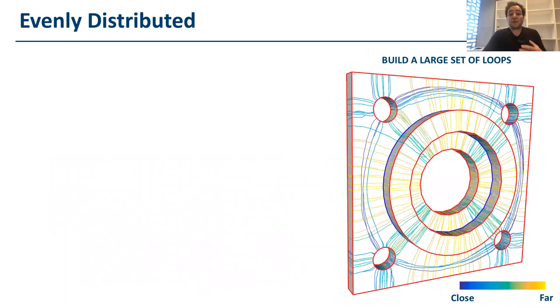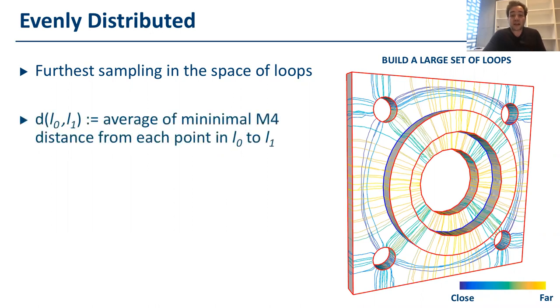In order to distribute the loops evenly on the surface, we perform further sampling in the space of loops. First we define the distance between two loops as average distance between each point of one loop to the closest point on the other. This distance is defined in M4 as defined in the paper by Pietroni and colleagues.